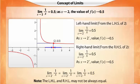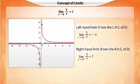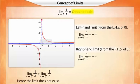However, we should note that the left-hand and the right-hand limits do not always produce the same value. Consider that we have to find the limit of 1/X as X tends to 0. We can see that as we approach 0 from the left-hand side, the height of the function approaches negative infinity. Hence, the left-hand limit is negative infinity. On approaching 0 from the right, we find that the height of the graph approaches positive infinity, giving us the right-hand limit as positive infinity. In this case, the left-hand limit is not equal to the right-hand limit, and so we say the limit does not exist.